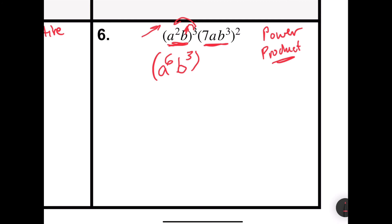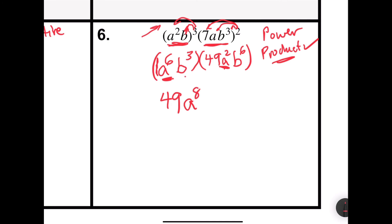For the second part, 7ab to the 3rd raised to the 2nd power — raise each item inside. 7 squared has always been and will forever be 49. The a: 1 times 2 is 2. Then b to the 3rd raised to the 2nd power, keep the b, 3 times 2 is 6. Second step, use the product rule — keep the base and add the exponents. 1 times 49 is 49. Base a: a to the 6th times a squared, keep the base a, 6 plus 2 is 8. Base b: b to the 3rd times b to the 6th, keep the base b, 3 plus 6 is 9. So my answer would be 49a to the 8th b to the 9th.